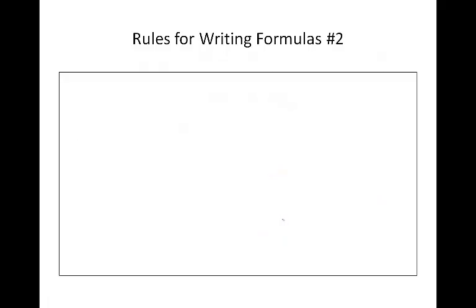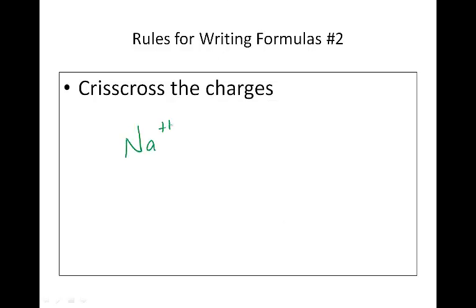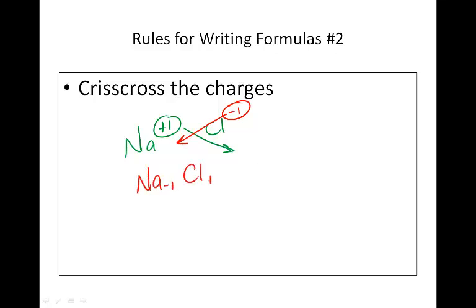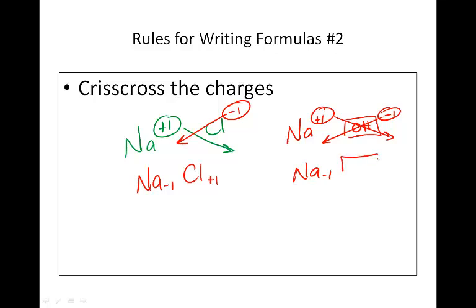Step two is to crisscross the charges. So sodium with a positive one — the charge on top goes to the bottom of chlorine. And chlorine's negative one goes to the bottom of sodium, giving Na with a negative one and Cl with a positive one. If doing a polyatomic ion, like Na⁺ and hydroxide⁻, you still crisscross your charges.